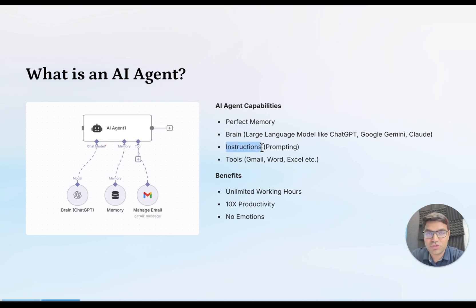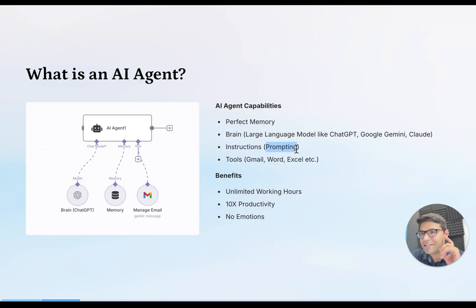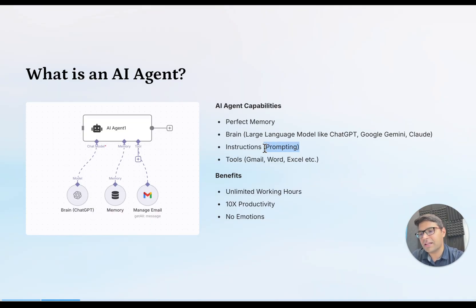Just as we provide instructions to a human being to perform a particular task, we provide instructions to an AI agent through prompting. You may have heard the term prompt engineering — that's very important work. People often misinterpret prompting as just a simple command in English, and yes, that is true, but giving that command in the right format with proper details is extremely important for your AI agent to work properly. If you don't give the right instructions, it won't give you the desired output.